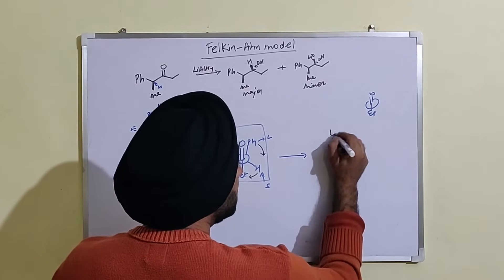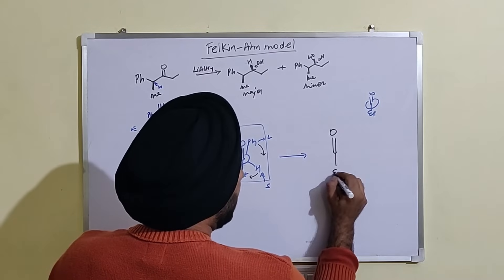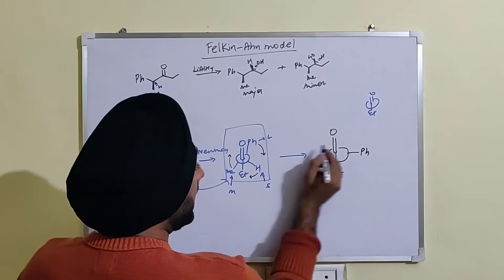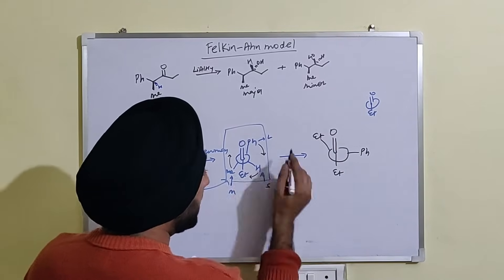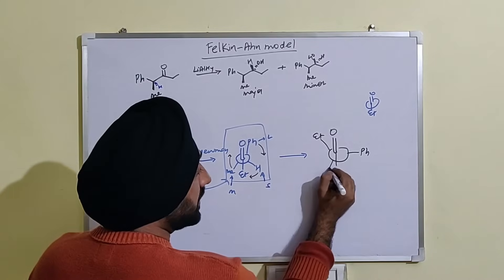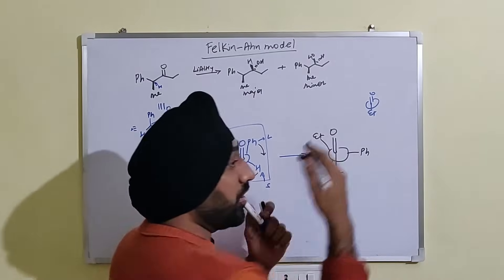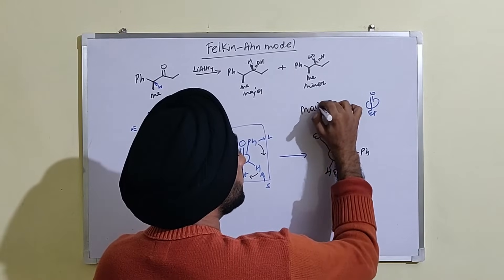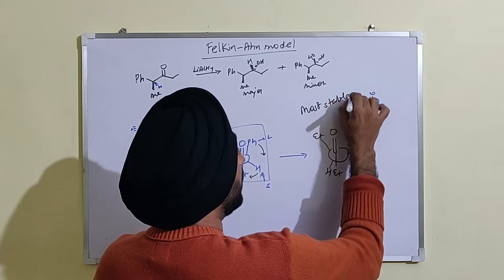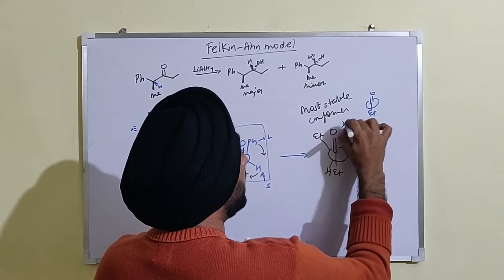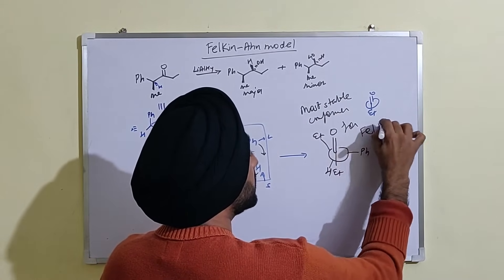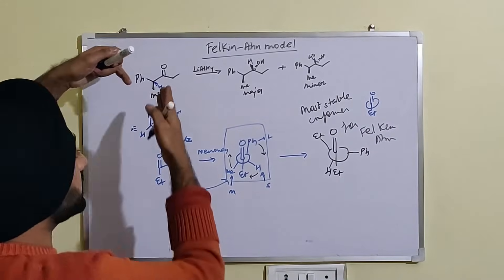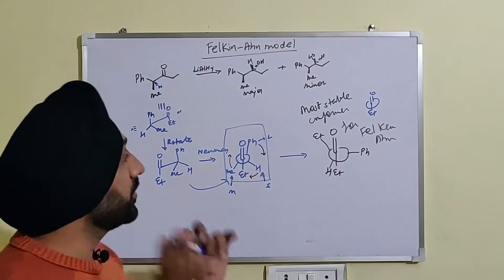As a result of the rotation, the phenyl group comes to the perpendicular position, the hydrogen moves to the other side. This is the most stable Felkin-Anh conformer for this particular molecule — where phenyl is perpendicular to the carbonyl, methyl is on one side, and hydrogen is on the other. This is the stable conformer you generate, which is absolutely correct for this particular molecule.